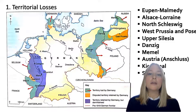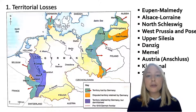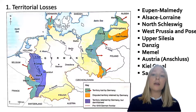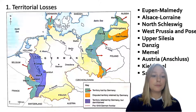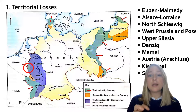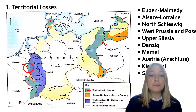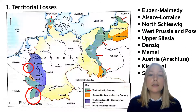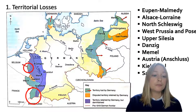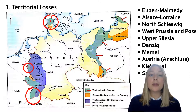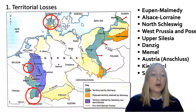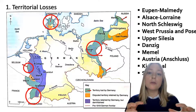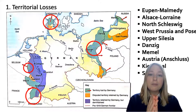So what was actually decided? The first area is territorial losses. The treaty removed over 70,000 square kilometres — equivalent to 13% of German territory — and took all of Germany's overseas territories as well. The districts of Eupen and Malmedy, subject to plebiscite, were handed over to Belgium. The province of Alsace-Lorraine, which possessed rich iron ore deposits and had been taken from France in 1871, was returned to France. North Schleswig, subject to a vote, was handed to Denmark. West Prussia and Posen were handed to Poland, creating the Polish Corridor, cutting Germany in two and giving Poland access to the sea.